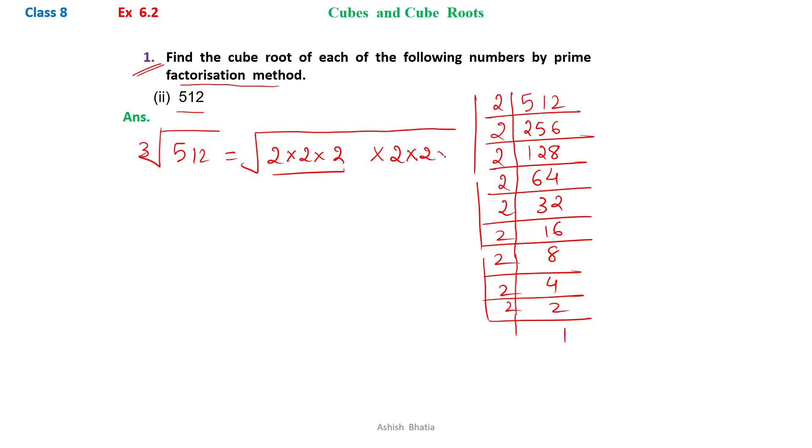We will write all the factors here. Now, from each group we can take out 1 digit out of the cube root.